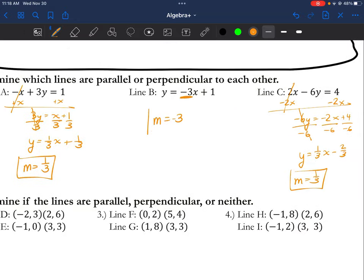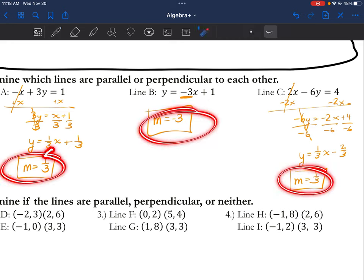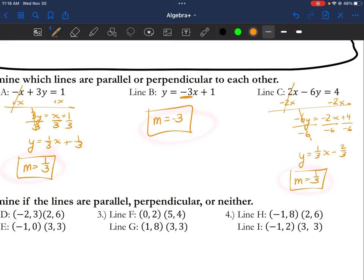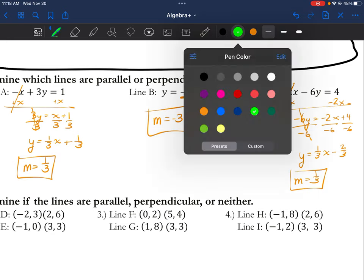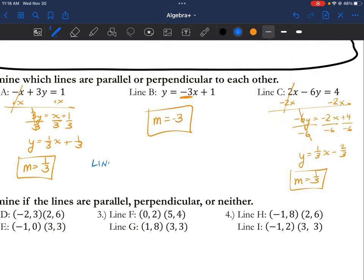Now take a look at all three of these slopes here. Off the bat, I can tell you that a and c are parallel because they're the same exact slope. So I can say that lines a and c are parallel. Or I could even write a is parallel to c.